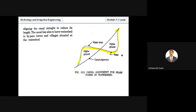This straight alignment avoids more canal length. However, areas skipped by the straight alignment do not receive irrigation. If irrigation is still required in those areas, alternative arrangements must be made.